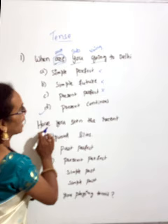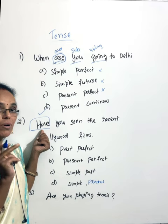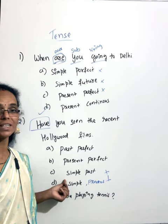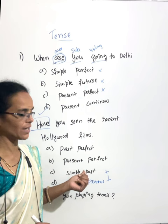Have you seen the recent Hollywood film? Have, has, or had — we will talk about perfect tense. You have two answers: past perfect and present perfect. Have or had in the past, has or had in the past.